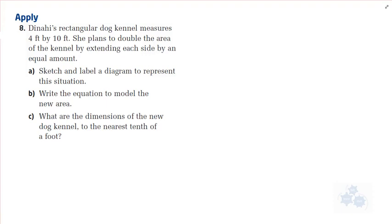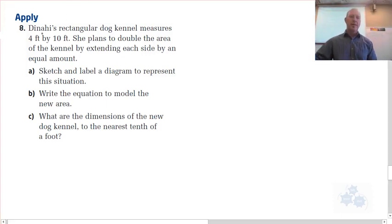Homework. So let's read through it together. Danahi's rectangular dog kennel measures four feet by ten feet. So I'm just going to make a sketch here, because remember a sketch is always a good idea if you can. And this is going to be four by ten. Alright? Can you see that?